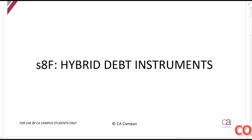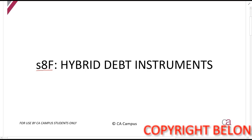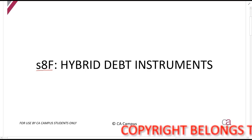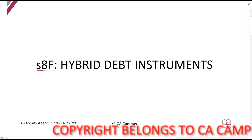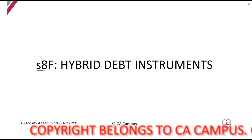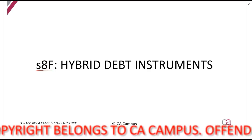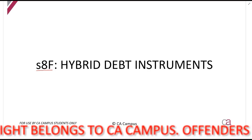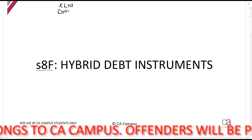In this session we're going to talk about Section 8F, the hybrid debt instrument section. This section deals with a situation in which a company or taxpayer issues a debt instrument, but SARS and the Act view it as a hybrid instrument — meaning they don't treat it as a debt instrument; they treat it as an equity instrument. Let's say there's a company, X Limited, and it issued a debenture.